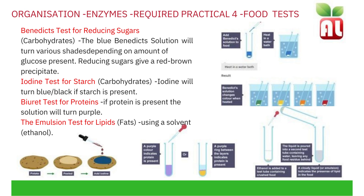The emulsion test is used to test for lipids or fats. You use a solvent, for example ethanol, and add it to your fat solution. When you pour the liquid into a second test tube containing water, you will see a cloudy liquid or an emulsion, indicating the presence of a lipid in your food.